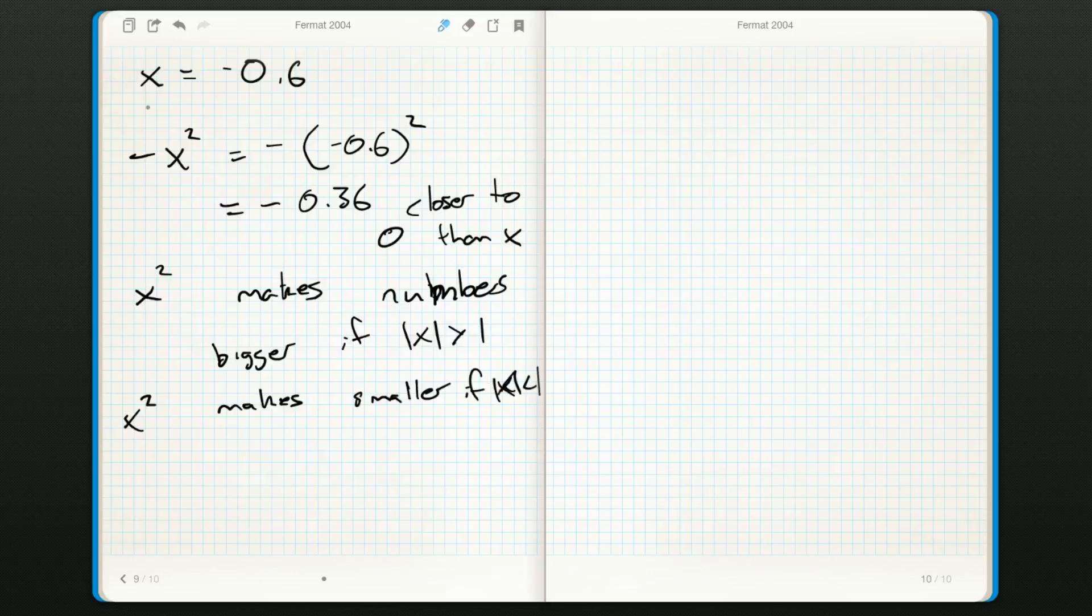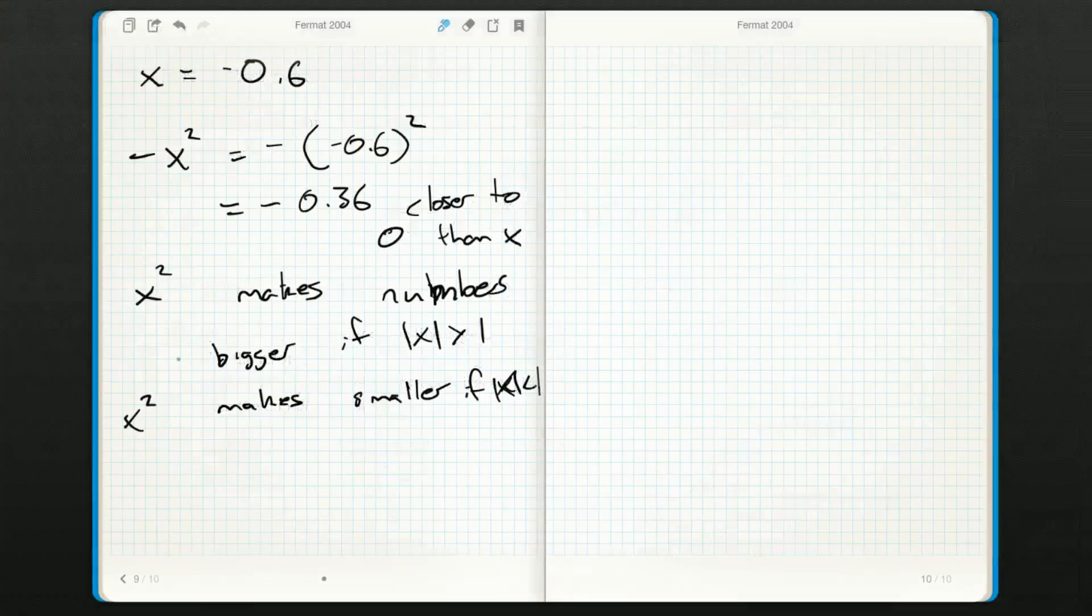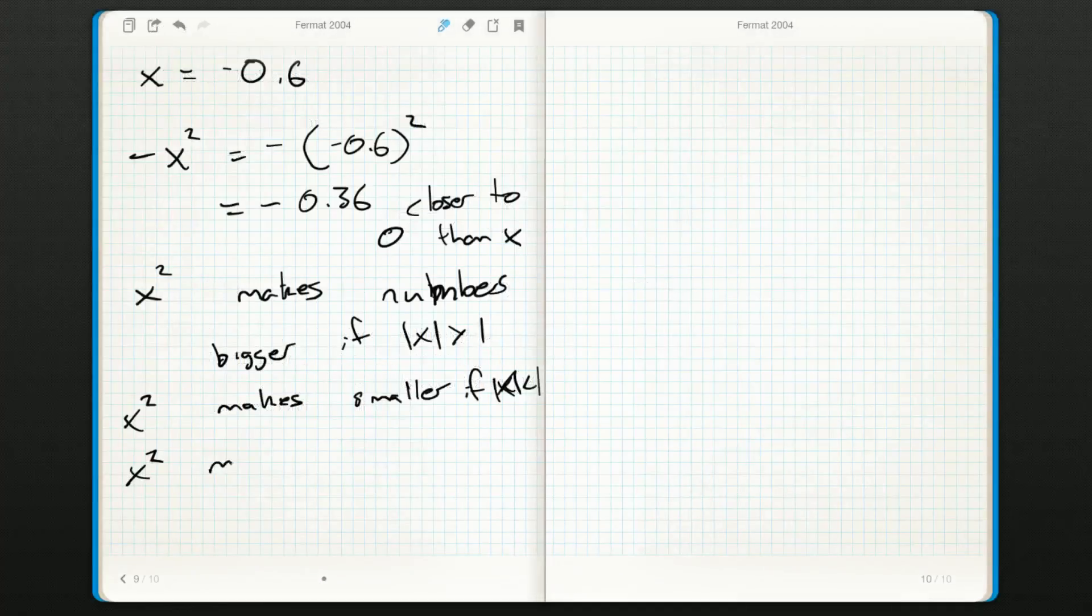The thing we start with, no matter how you slice it, if you look at this x here, he is within one unit of zero. So squaring him should bring him closer to zero. Now squaring always makes things positive. So negative x squared should be negative and closer to zero than x is.